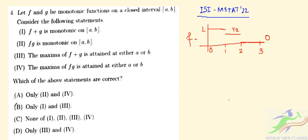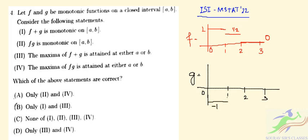And let g be another function. So g is defined on [0, 3]: from 0 to 1 it is −1, from 1 to 2 it is 1/2, and from 2 to 3 it takes a certain value.